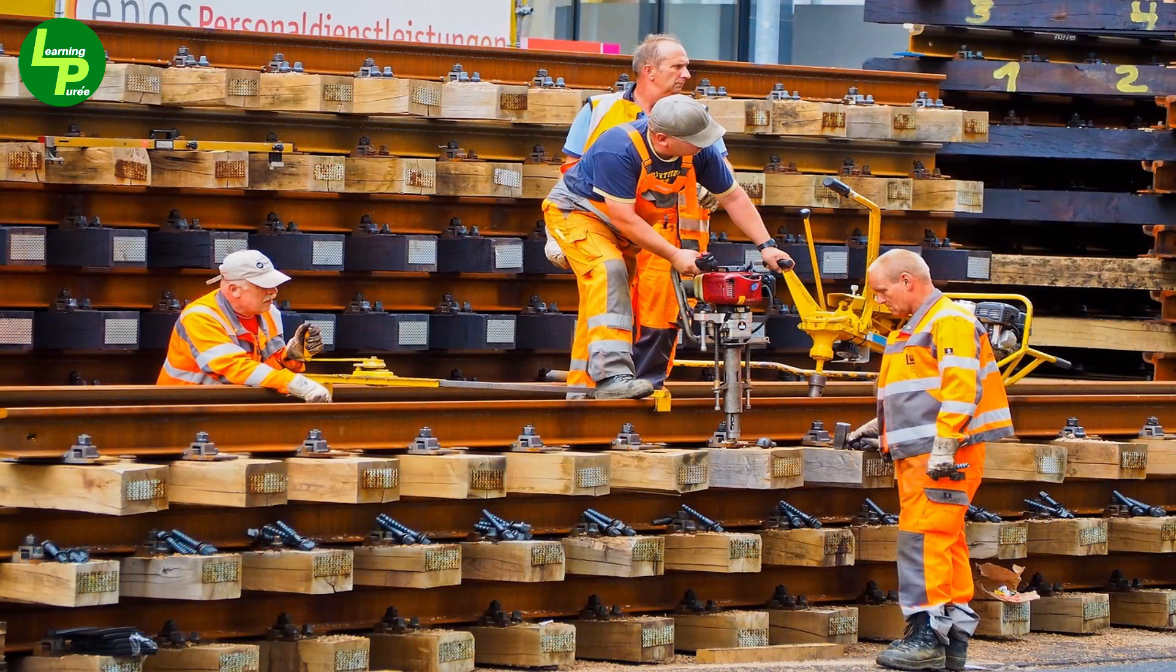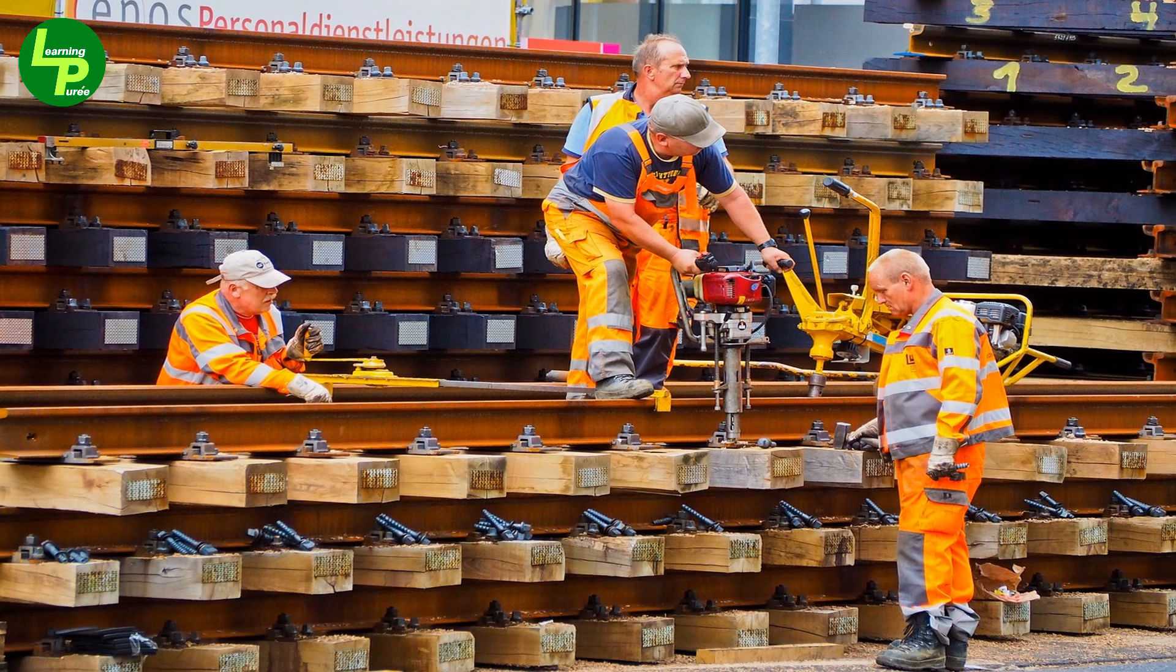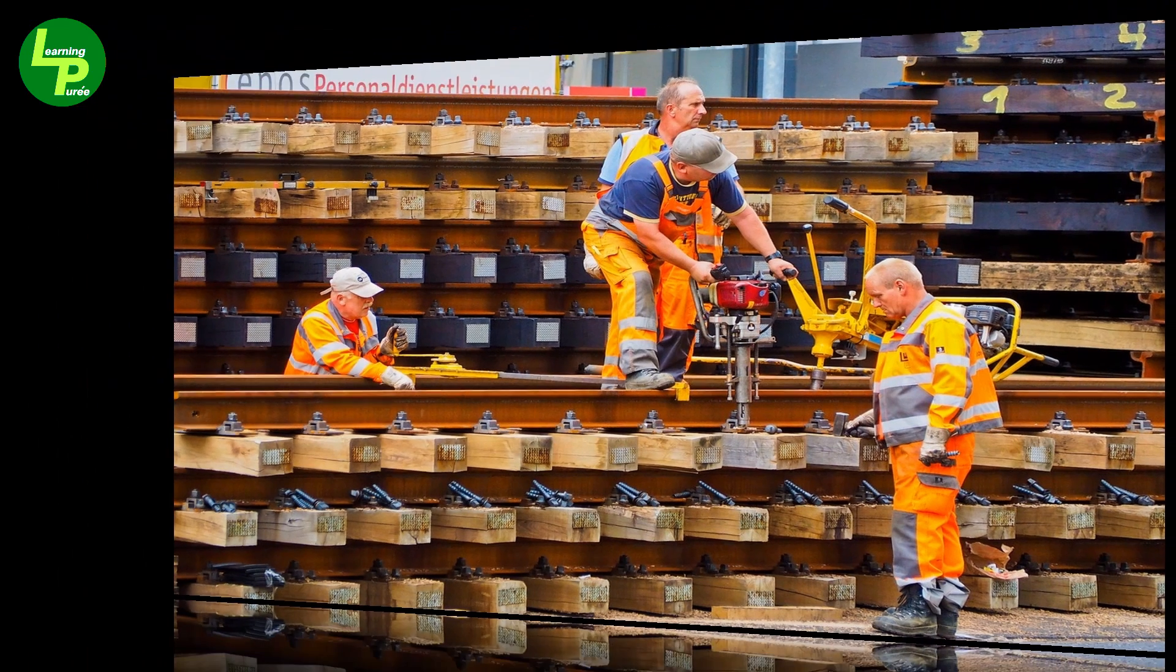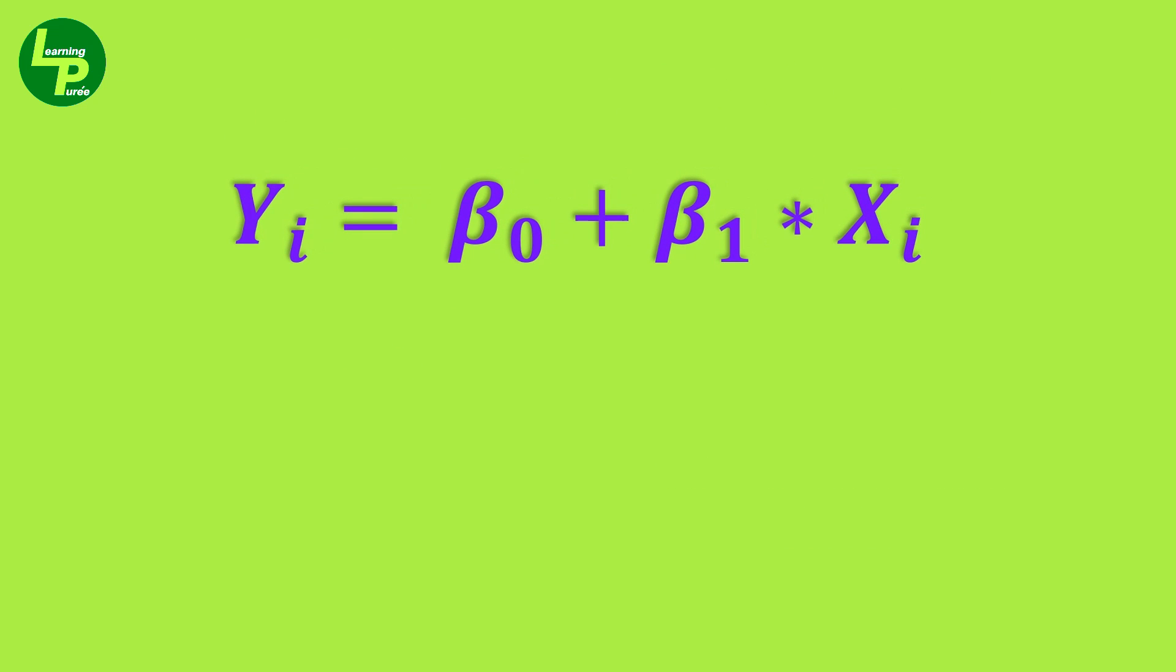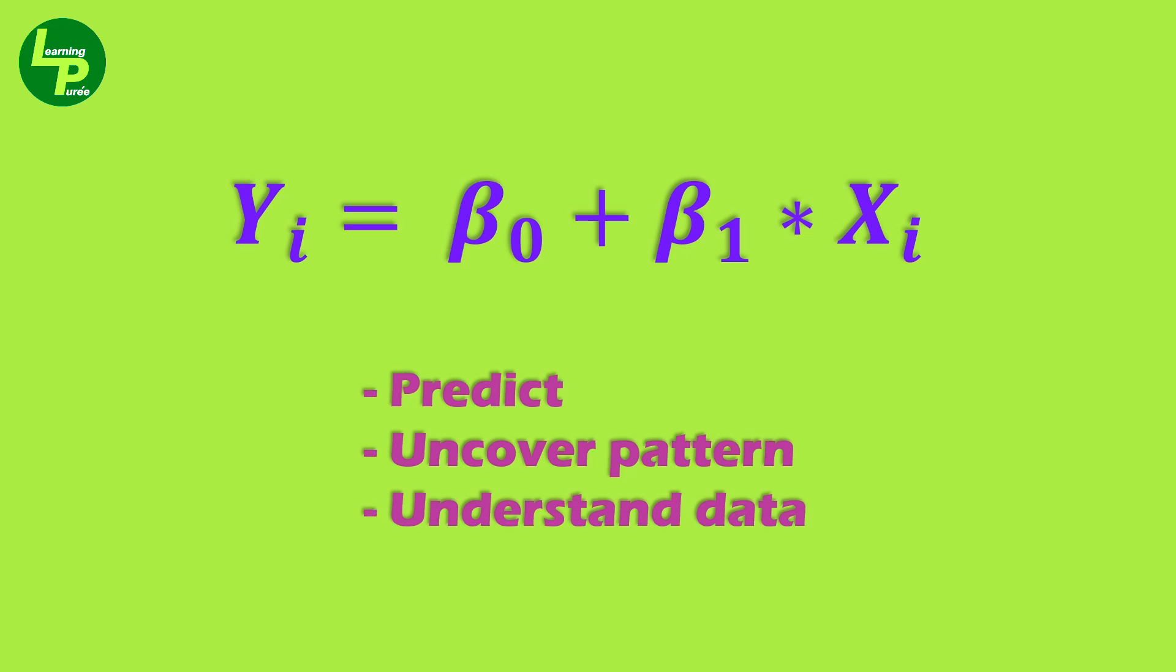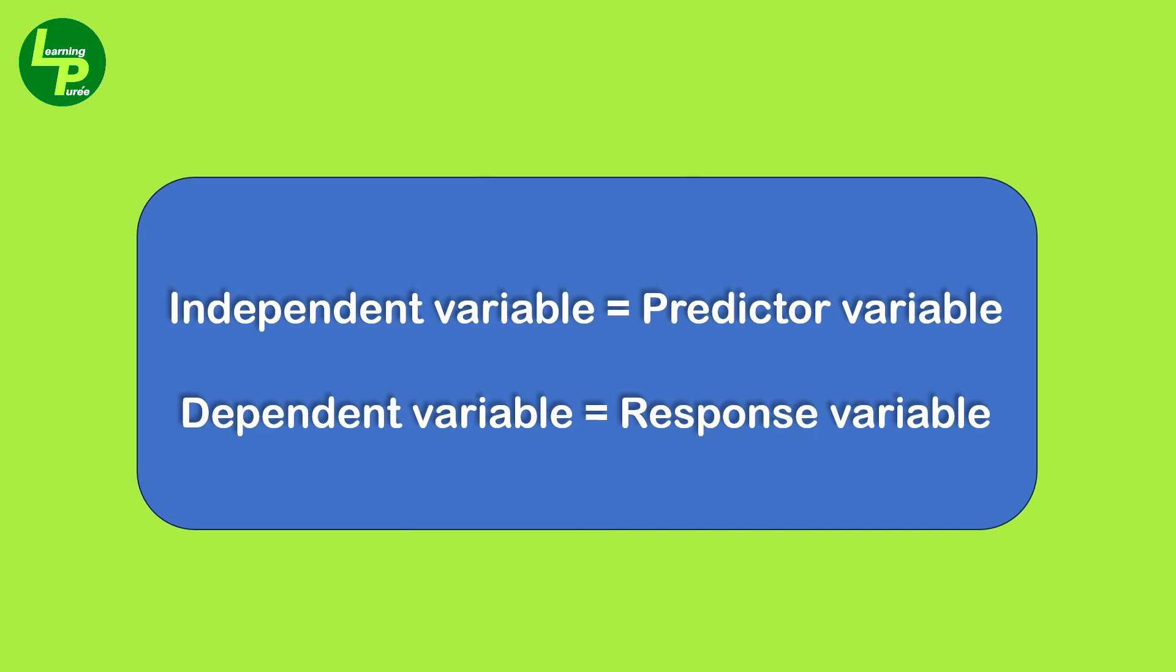Before we jump into the depths of regression, let us lay the foundation. Linear regression is a statistical approach that helps us understand and model the relationship between two variables, that is an independent variable and a dependent variable. Through this model, we can make predictions, uncover patterns, and gain a deeper understanding of our data.